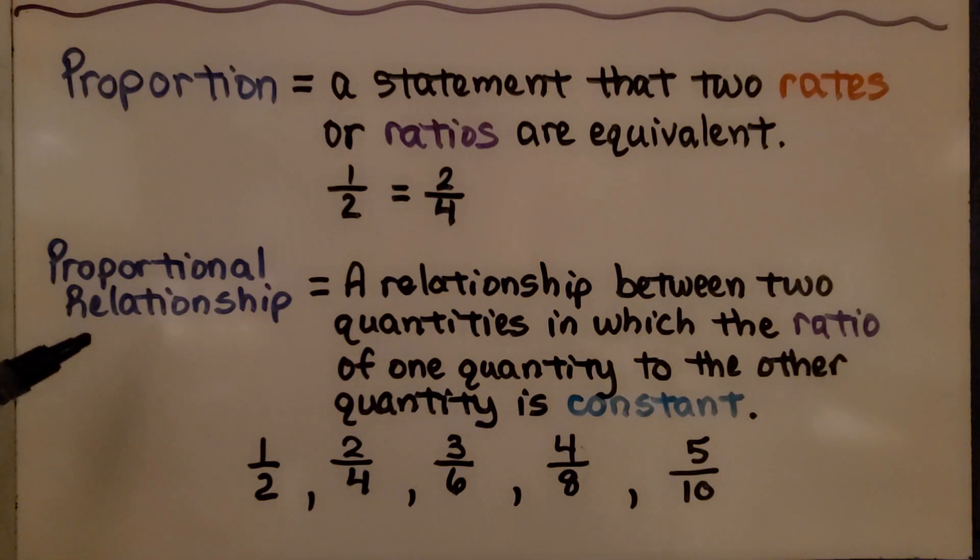A proportional relationship is a relationship between two quantities in which the ratio of one quantity to the other quantity is constant. Each one of these is equal to one-half. They're all in proportion to each other. They have a proportional relationship.